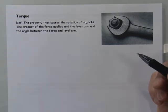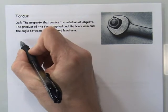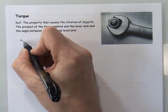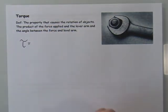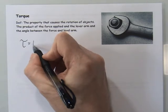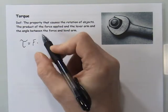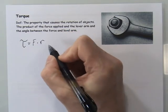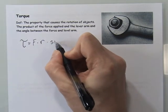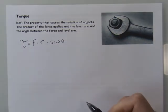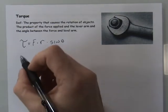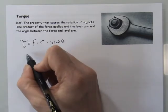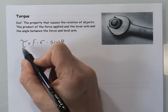The angle at which you apply that force also makes a difference. The symbol for torque is the Greek letter tau, and it equals the product of three things: the force, the lever arm, and the sine of the angle between them. We'll see why it's the sine of the angle in just a moment.